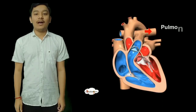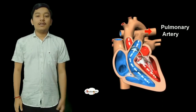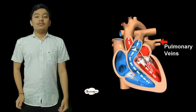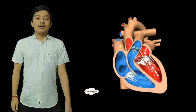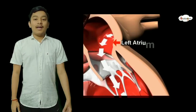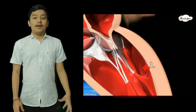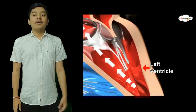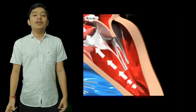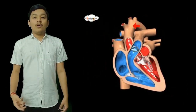The left side of the heart receives blood from the lungs and passes it to the rest of the body. The newly oxygenated blood returns to the left atrium via the pulmonary veins. Once the left atrium fills it contracts and sends blood into the left ventricle, which then contracts and pumps blood out to the body.